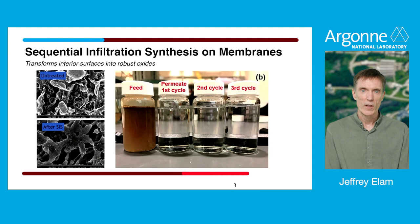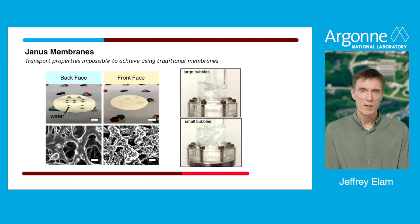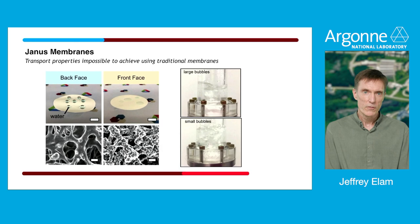Another application for our SIS technology is to create Janus membranes. Janus membranes have a different chemical functionality on the front face versus the back face, and as a result they can impart some special kinds of properties including ion selectivity. In this example, we've used SIS to provide a hydrophilic surface treatment only on one side of a polymer membrane.